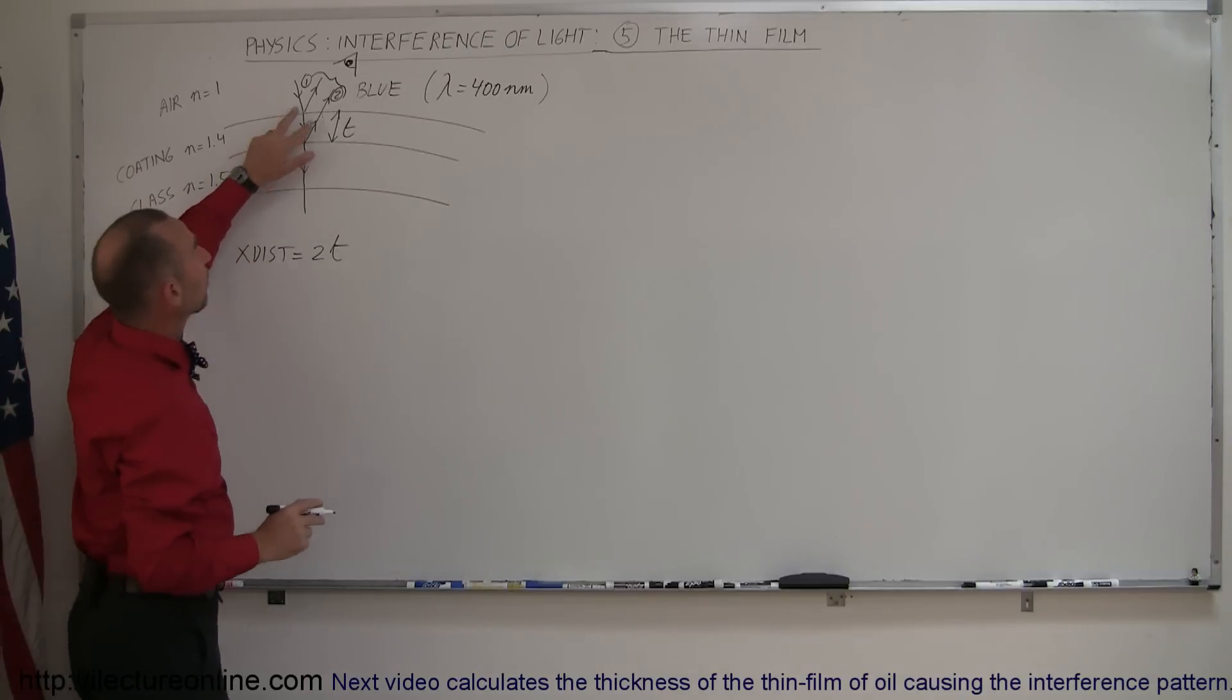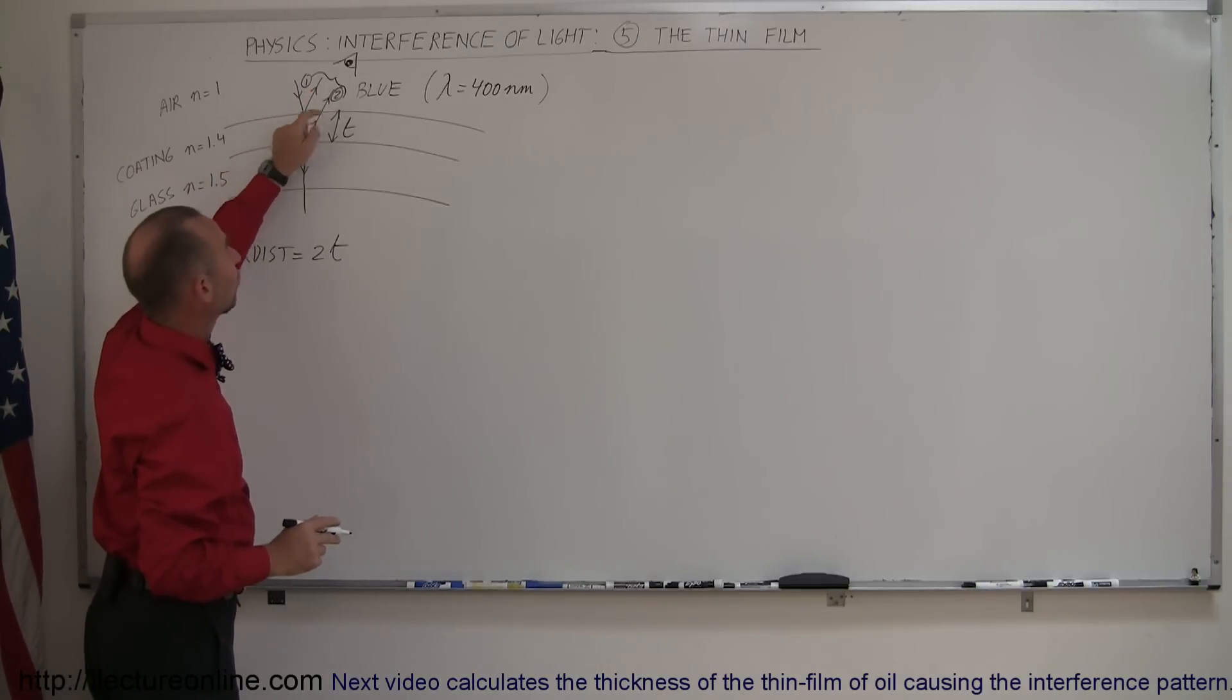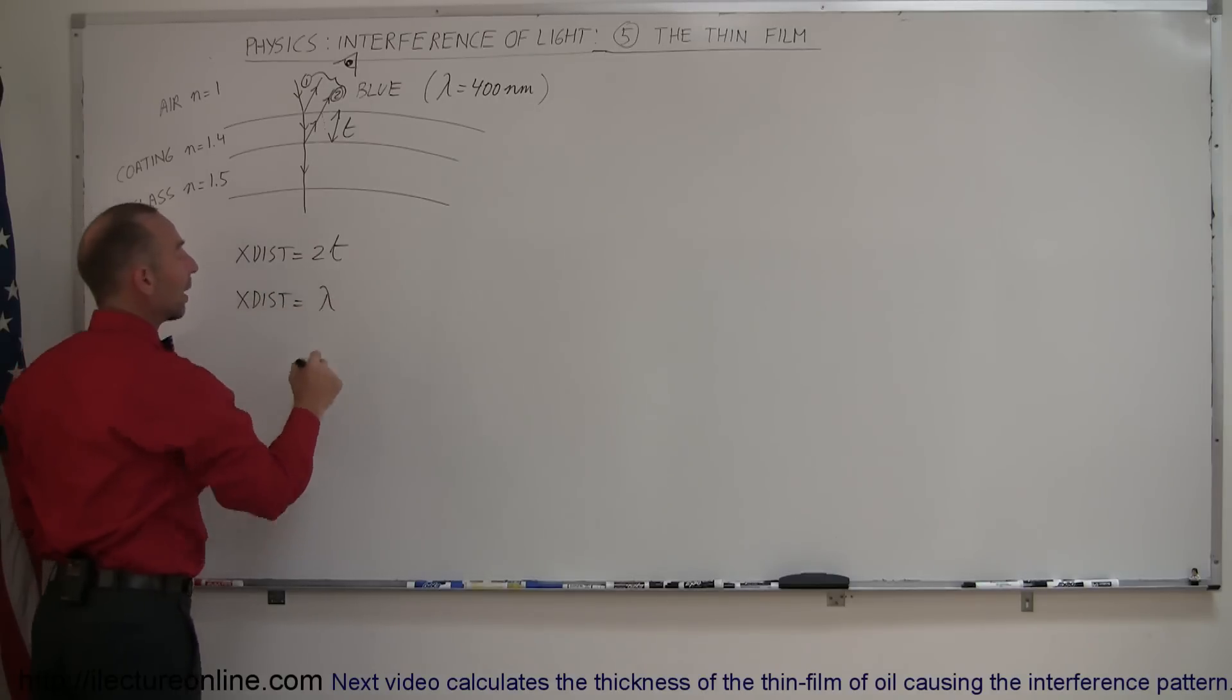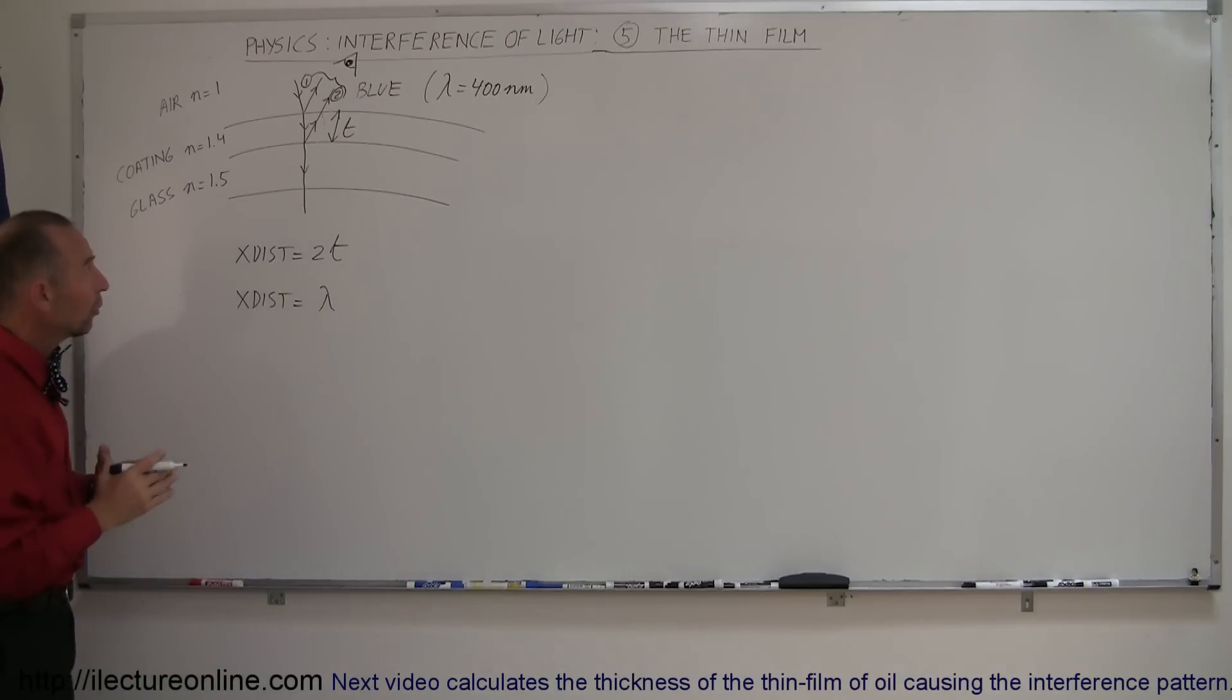Now, for the light to be reflected, these two have to be in phase, which means that the extra distance traveled must equal a full wavelength. If they're equal to a full wavelength, then, of course, they will be back in phase and there'll be constructive interference.